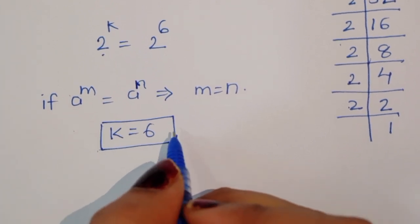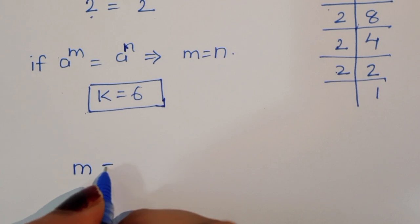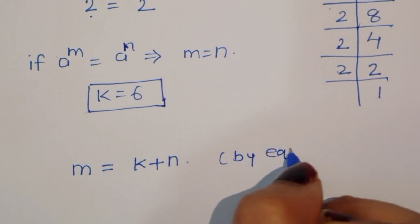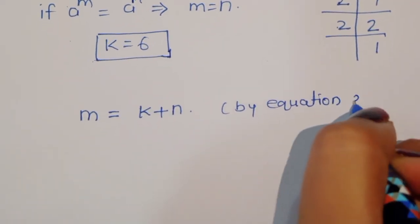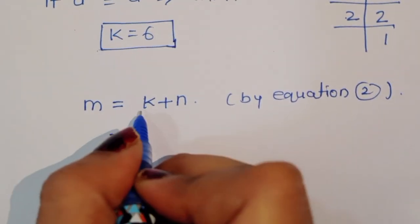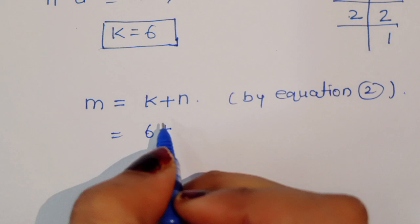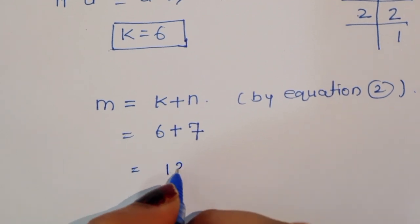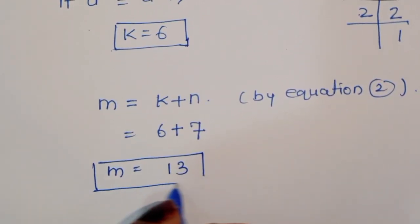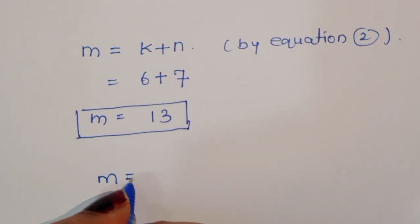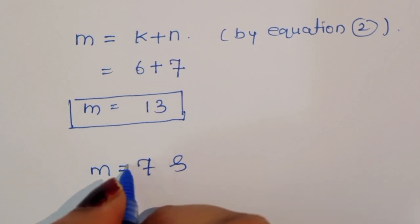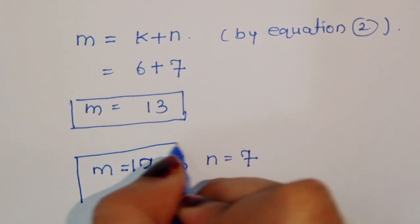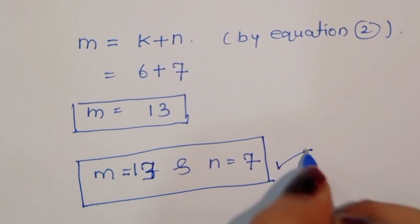Now we find the value of m. We know that m is equal to k plus n by equation 2. Substituting, m equals 6 plus 7, which is 13. So the value of m is 13 and n is 7. This is the solution. Thank you.